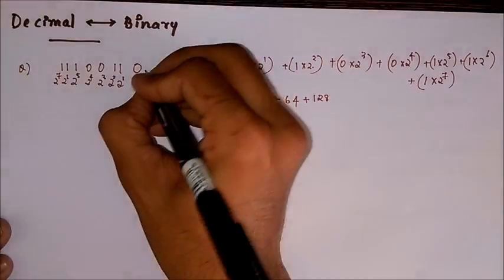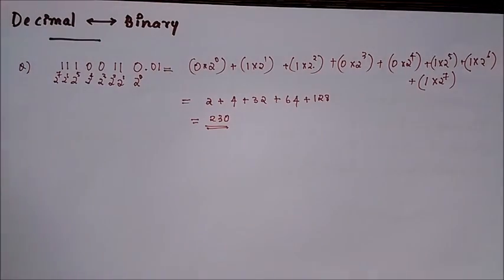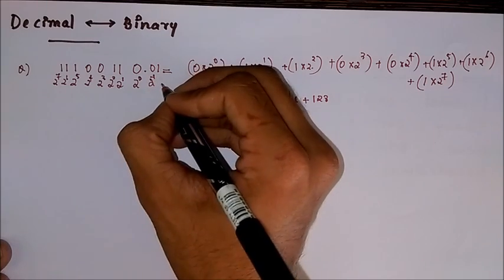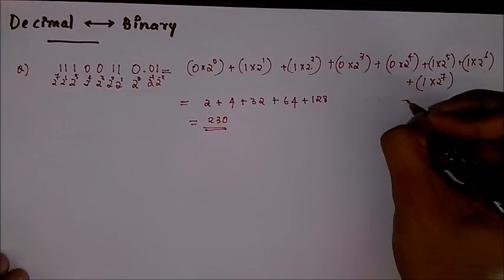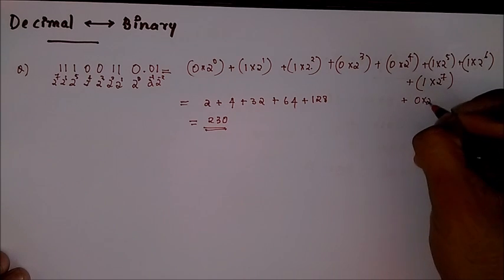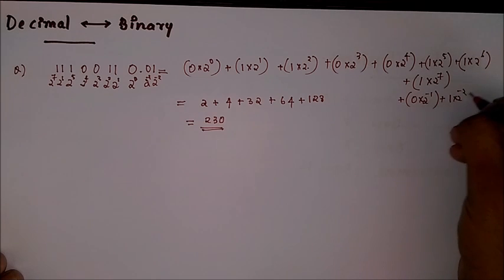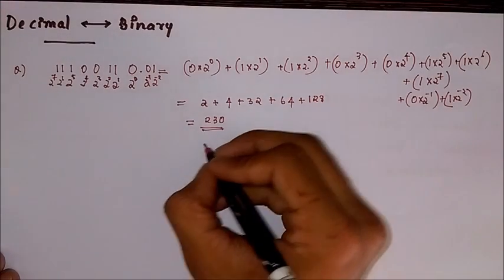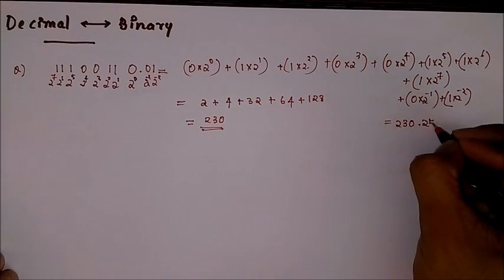Now suppose we have .01 after the decimal point. We multiply those digits by the corresponding negative powers: 0×2⁻¹ + 1×2⁻². Since 2⁻² is 1/4, which gives 0.25, our new answer would be 230.25.